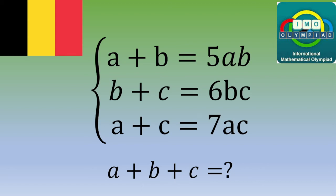Hello and welcome. In this video, we work on an exercise from the Belgium Mathematical Olympiad. We have a system with three equations: A plus B equals 5AB, B plus C equals 6BC, and A plus C equals 7AC. We are asked to find the value of A plus B plus C.